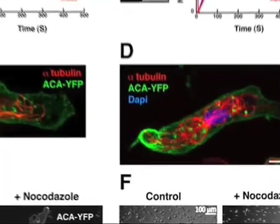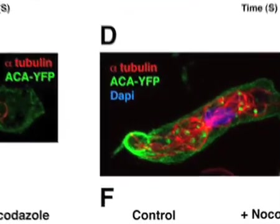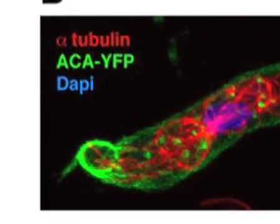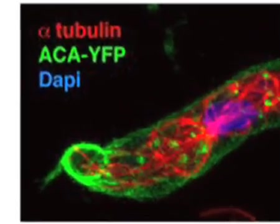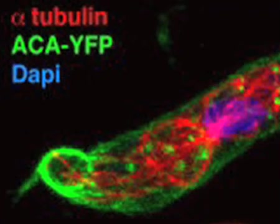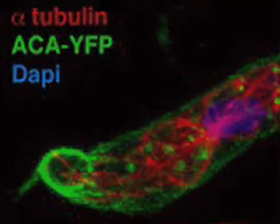The theory was, then, that the delivery of the ACA-containing vesicles to the back of the cell enables the amoeba to locally make and release the chemoattractant.